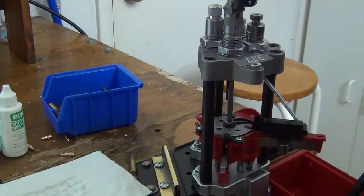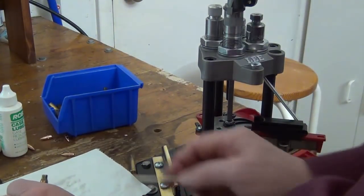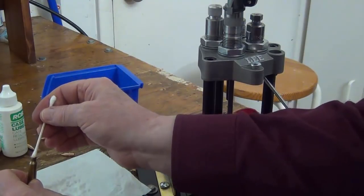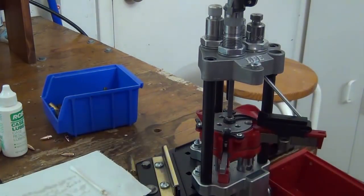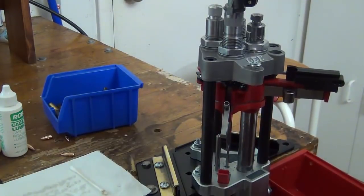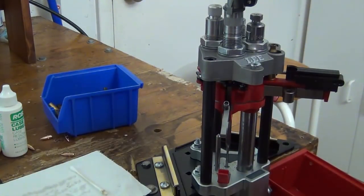Just for a quick check, I'm going to lube a single case. You'll want to probably do those in batches when you're really producing cartridges. There, that's lubed. Now bring the handle down and drop the case in the hole.